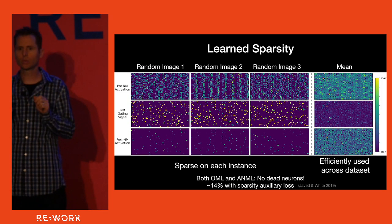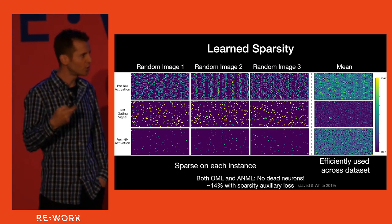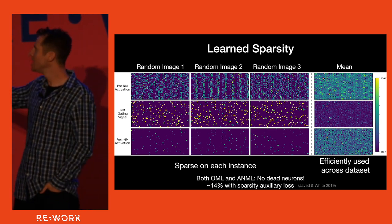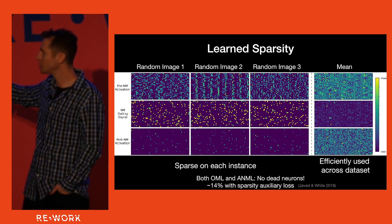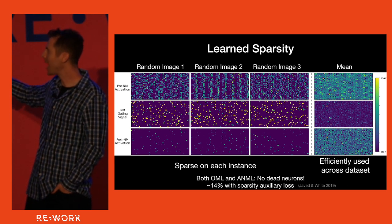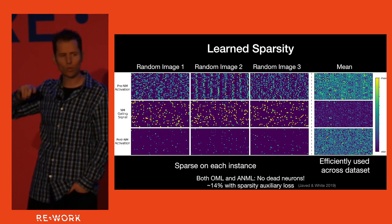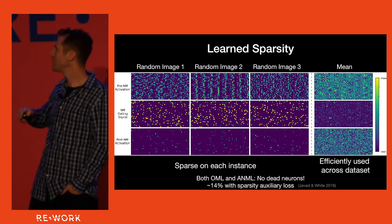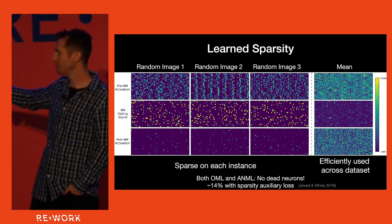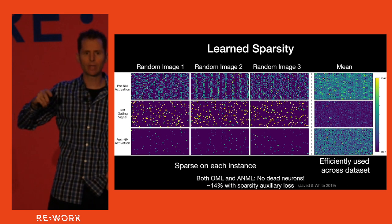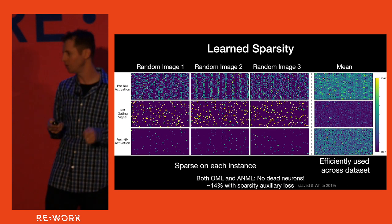Also like OML, ANIMAL on its own learns to produce sparse representations. Looking at three different random images from the meta-test test set, on each image different neurons are firing, but not all neurons. On average, ANIMAL is using all of its capacity and efficiently using the neurons we give it. In contrast, if you directly reward sparsity, about 14% of neurons tend to be entirely dead because it overshoots the mark. With ANIMAL and OML, none of the neurons are dead — they're all used by the system.